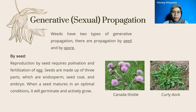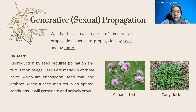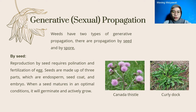Generative or sexual propagation has two types: propagation by seed and by spore. Reproduction by seed requires pollination and fertilization. Seeds are made up of three parts, which are endosperm, seed coat, and embryo. When a seed matures in optimal conditions, it will germinate and actively grow.